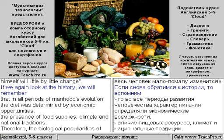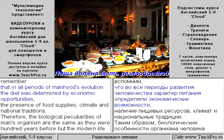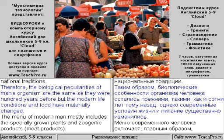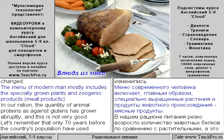If we look at history, we will remember that in all periods of mankind's evolution the diet was determined by economic opportunities, the presence of food supplies, climate, and national traditions. Therefore, the biological peculiarities of man's organism are the same as they were a hundred years before, but the modern life conditions and food have materially changed.